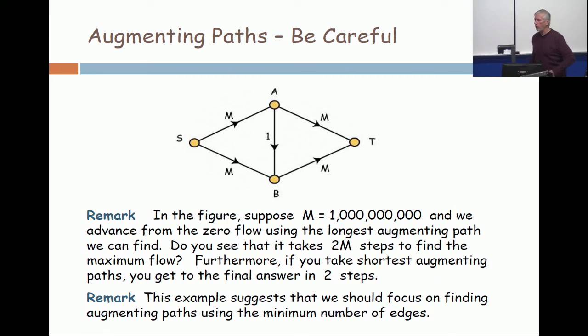Again, you look for the longest augmenting path. Now you can increase, increase, increase. So it goes back and forth and back and forth. You put one on, take one off, put one on, take one off through that middle edge. You get to the optimum answer, but you get there in two billion steps.